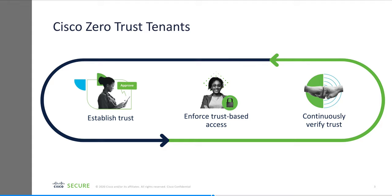Our approach for zero trust is built on three steps. First, establish trust — the focal point for our conversation today. We establish trust by verifying user identity and the health and posture of the device they are leveraging. Device posturing can provide firmware, iOS recommendations, updates, or whether the device has been tampered with or potentially compromised. Next, we enforce trust based on access, providing least privileged access — users have access to exactly what they need and nothing that they don't. And finally, we continuously verify that users and devices are the same for the duration of the session and make sure we aren't introducing any risk. If a compromise is detected, we change the trust level and prohibit access.